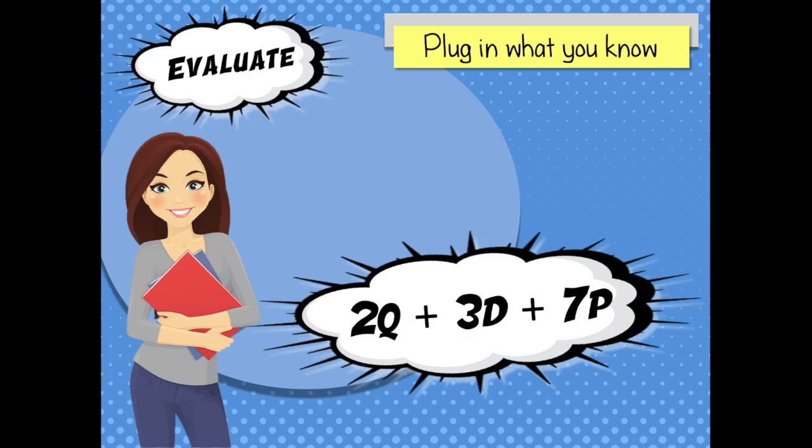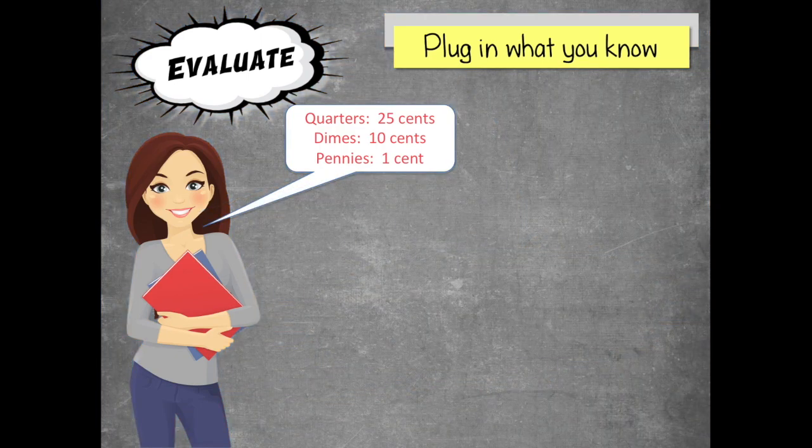So in this case I know that quarters are 25 cents, dimes are 10 cents, and pennies are 1 cent. So we'll plug that in. Here, wait, let me switch to a chalkboard so we can work it out.